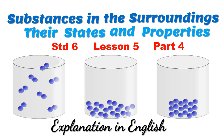Today students will be doing the final part, that is part 4 of Lesson 5 from the General Science textbook for Standard 6 — Substances in the Surroundings: Their States and Properties. For a complete lesson, do watch parts 1, 2, 3 and 4. You will get the link in the description box below.